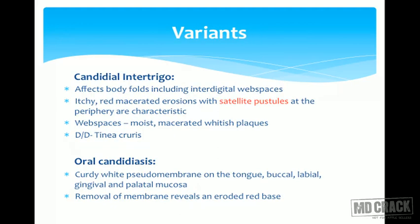Coming to the variants of Candidiasis. First is Candidial intertrigo, referring to Candidiasis of the intertriginous areas or body folds, including interdigital web spaces. The patient presents with itchy, red, macerated erosions with satellite pustules at the periphery — which is very classical for Candidiasis. The closest differential diagnosis is Tinea cruris, but satellite pustules are not seen in Tinea cruris.